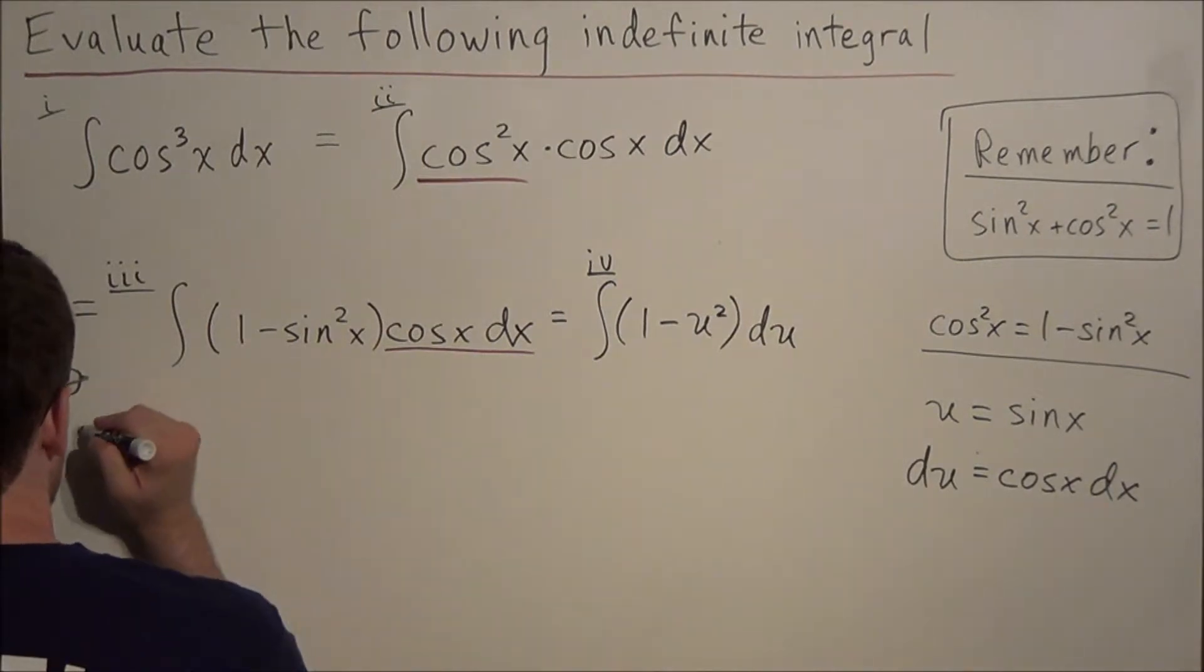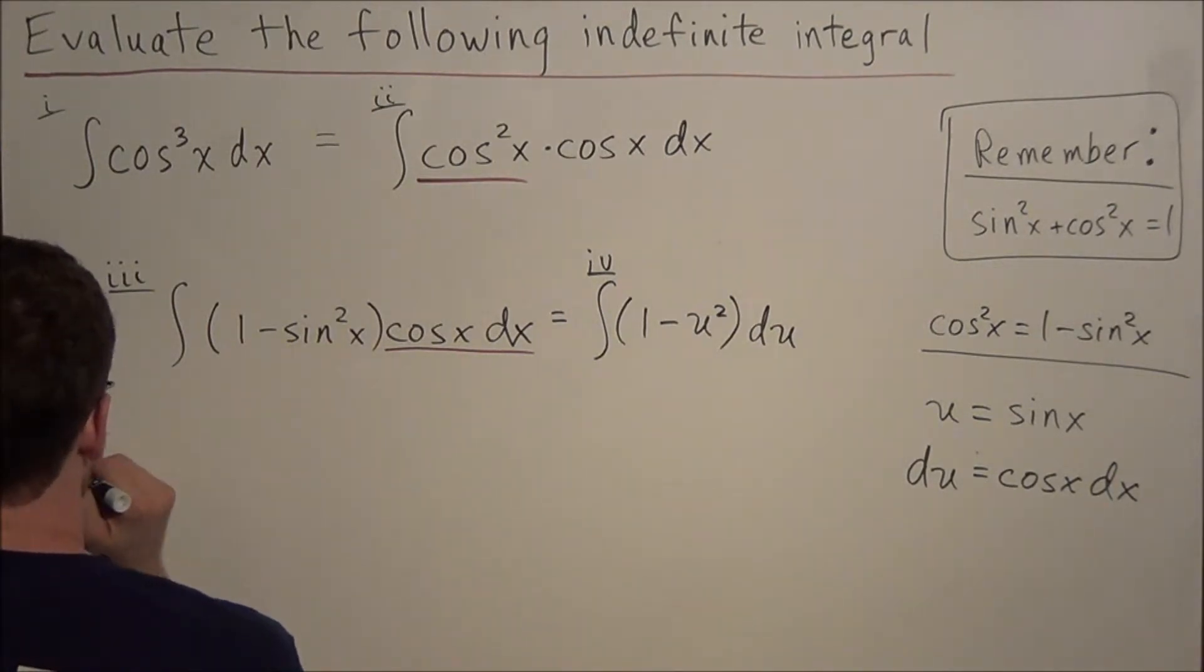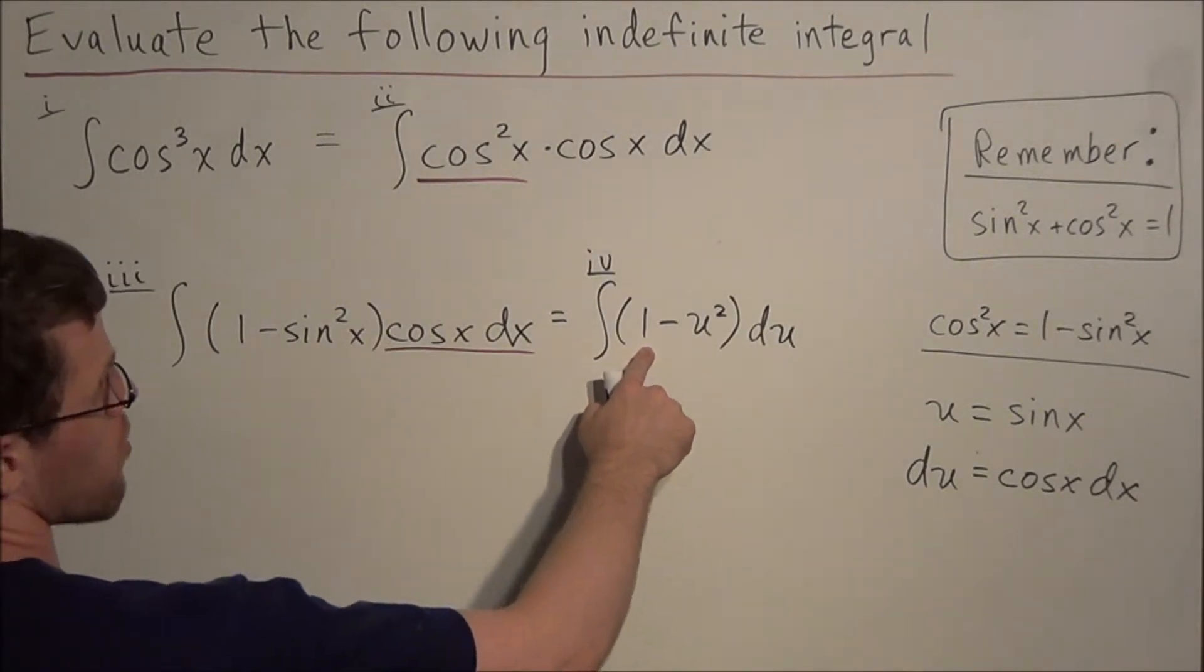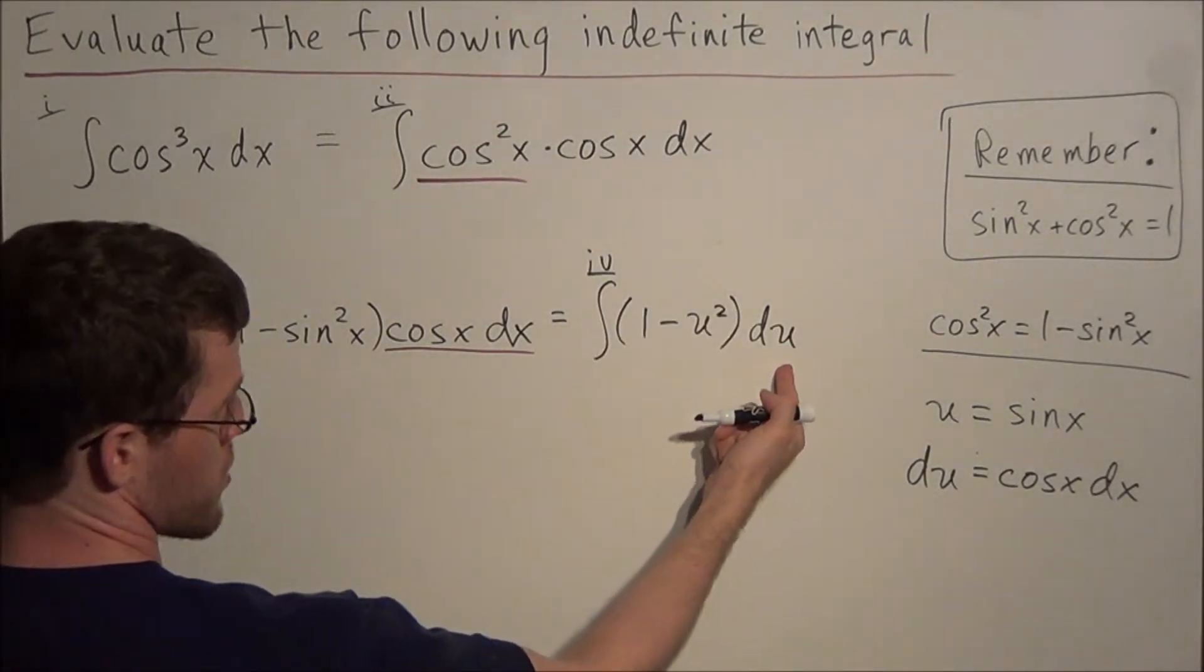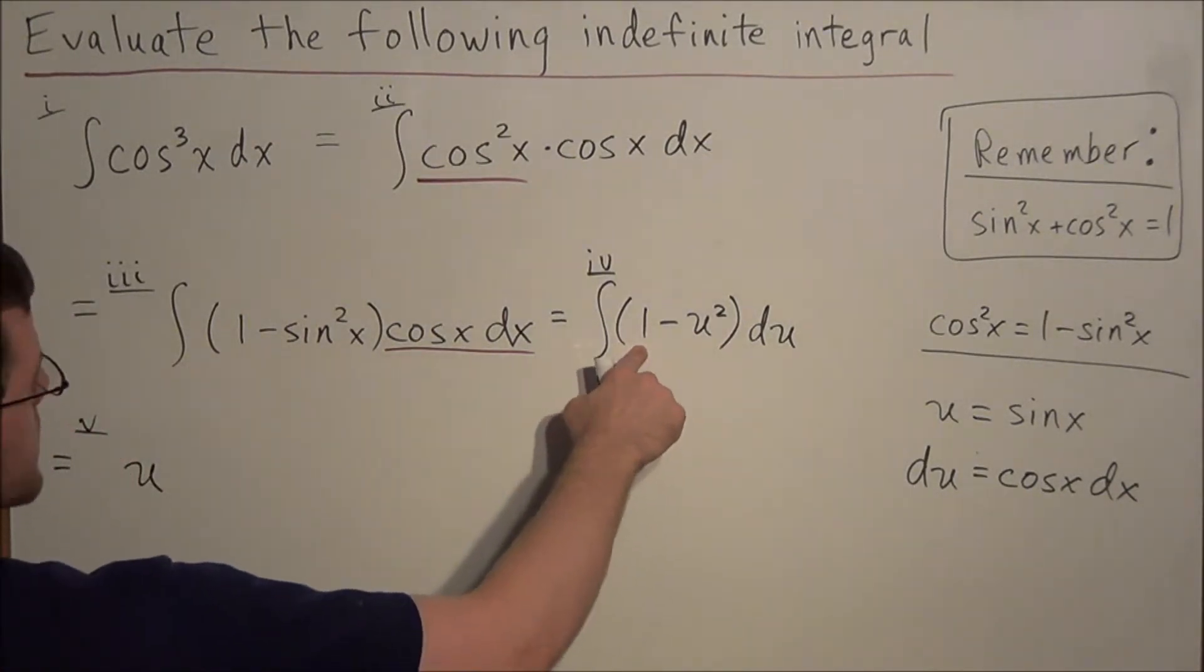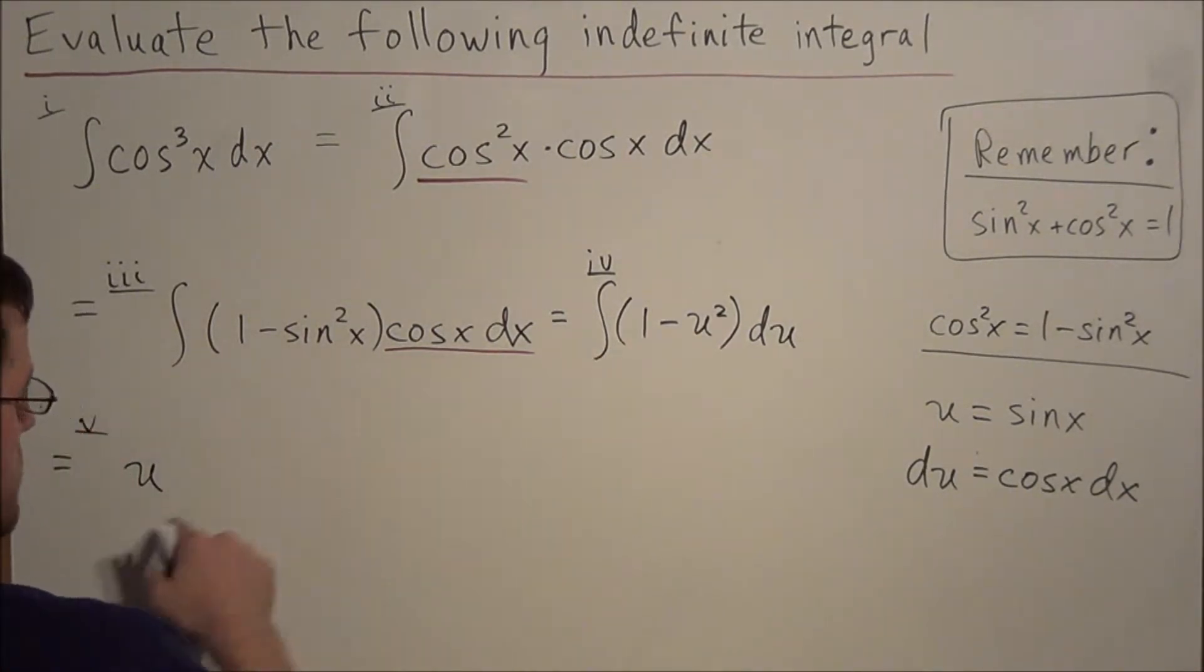So for line 5, we can say that this integral equals the anti-derivative of 1, when we're considering the variable u, is simply u. So once again, the anti-derivative of the constant term 1 is simply u.